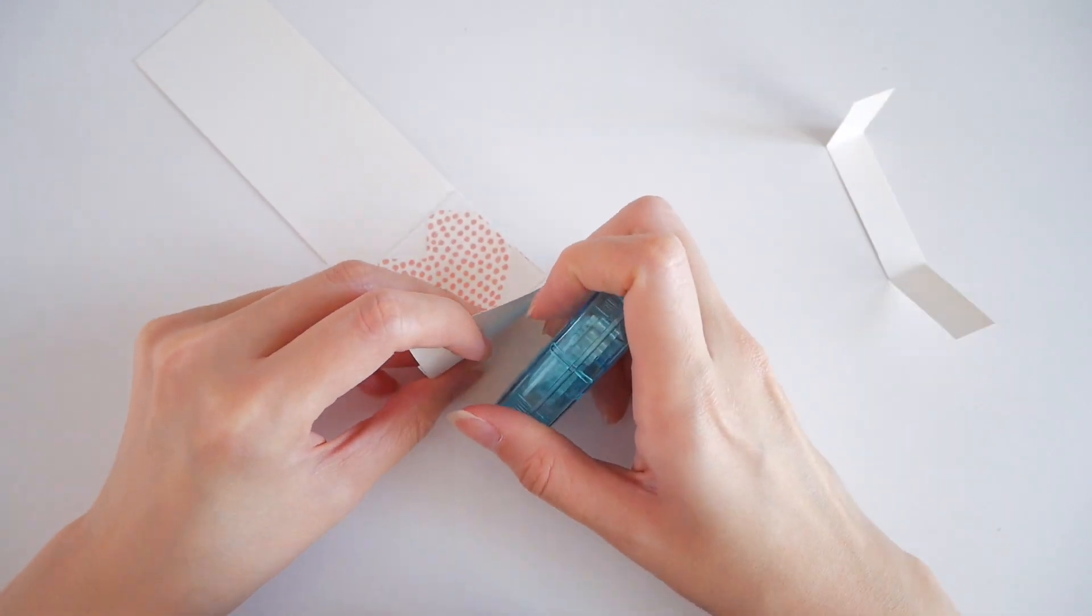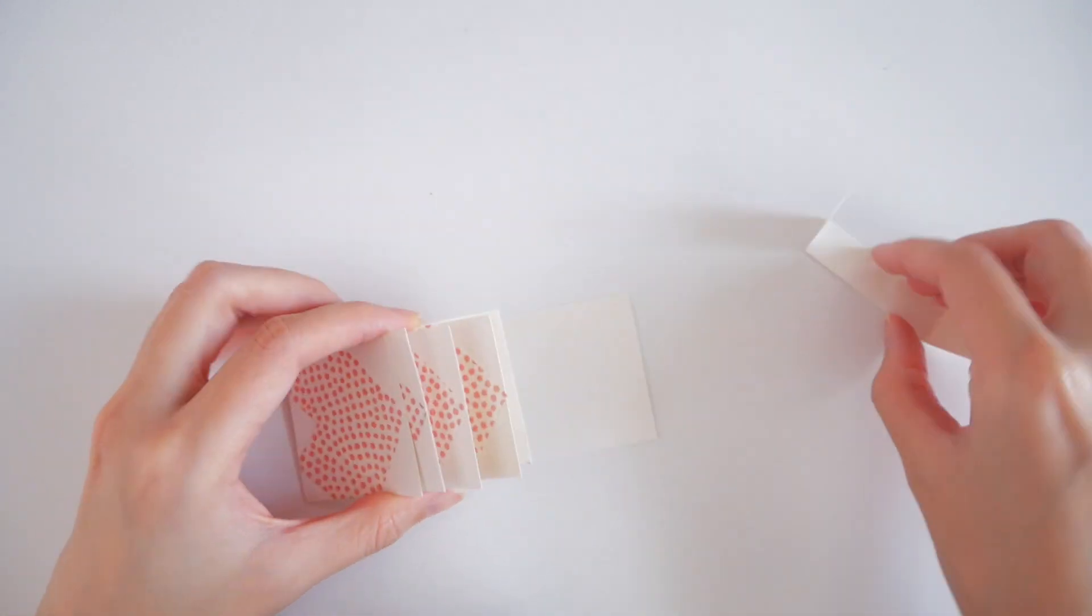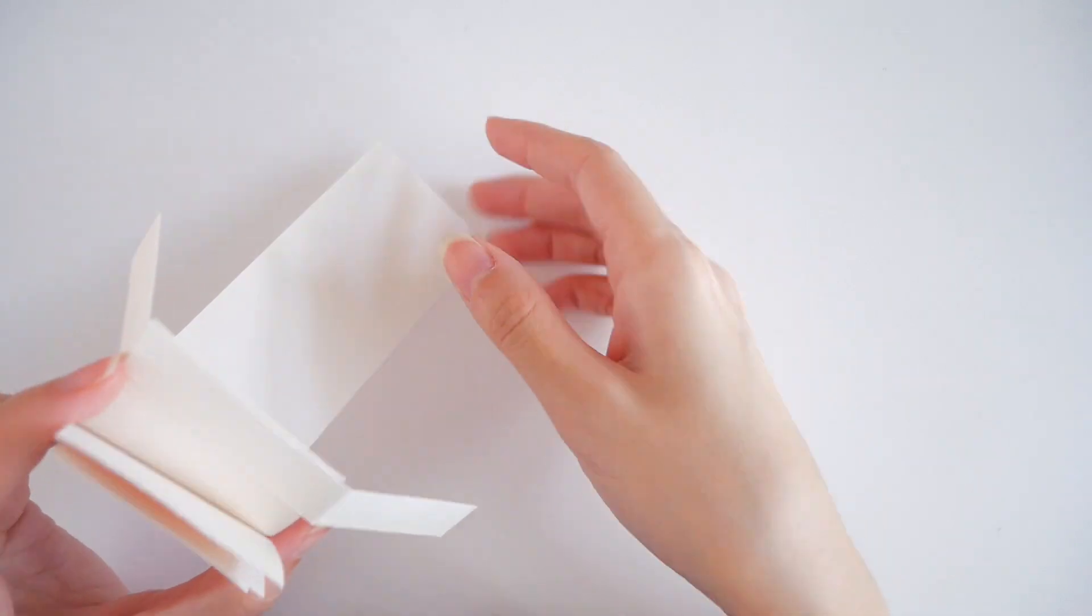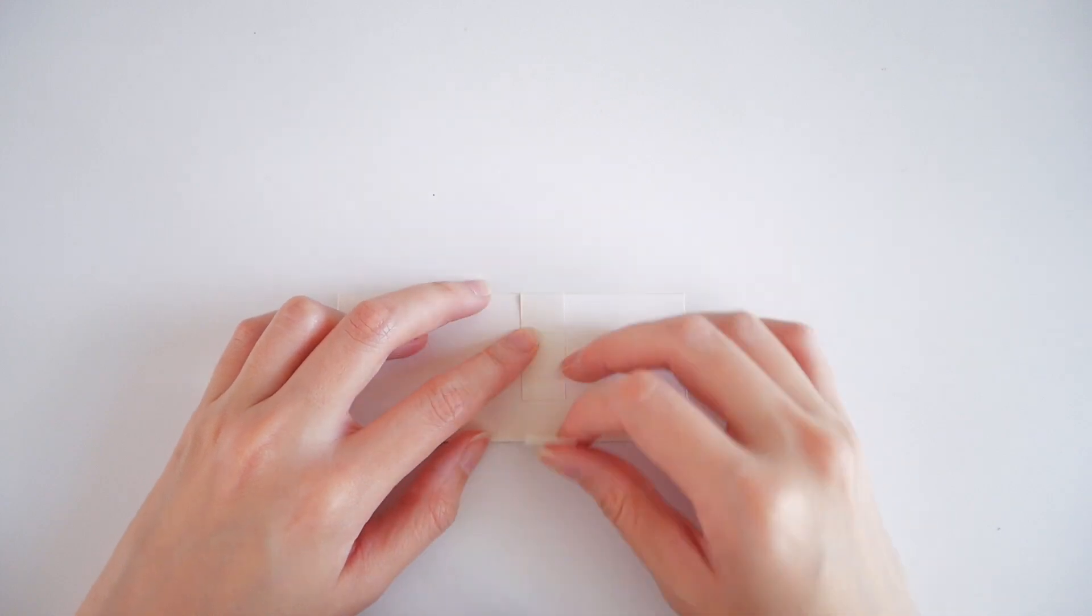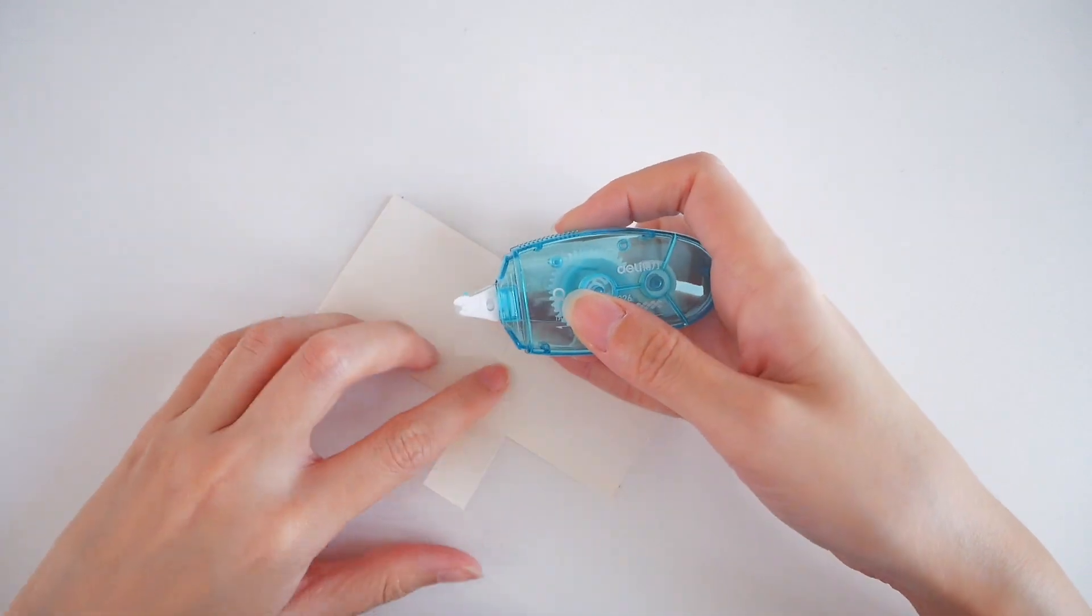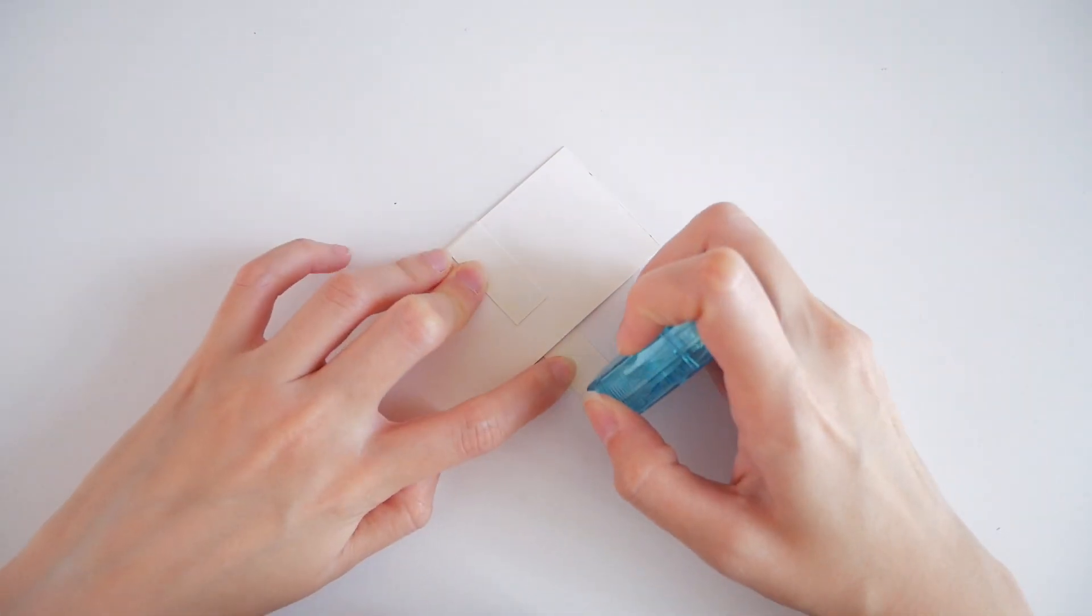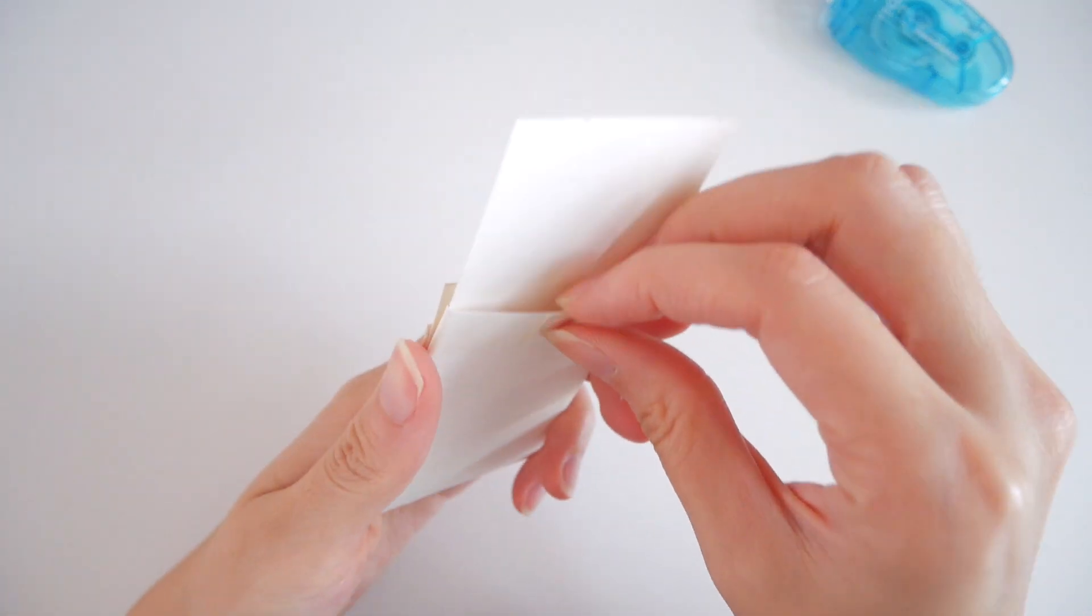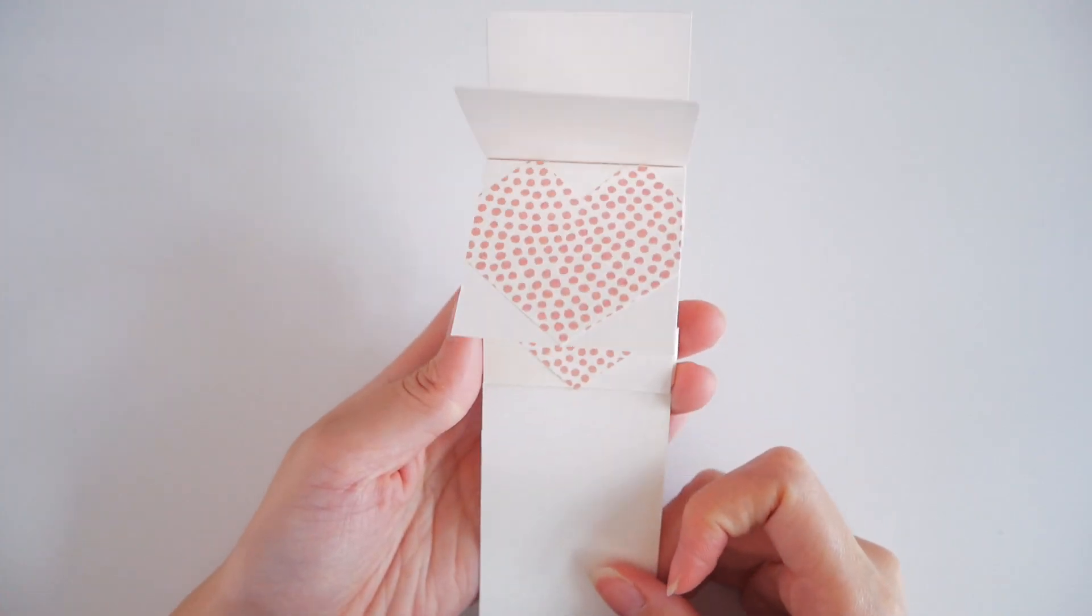Apply glue to secure the strip. Make sure the strip is not glued on the back of the long flap. If not, the cards won't be able to move.